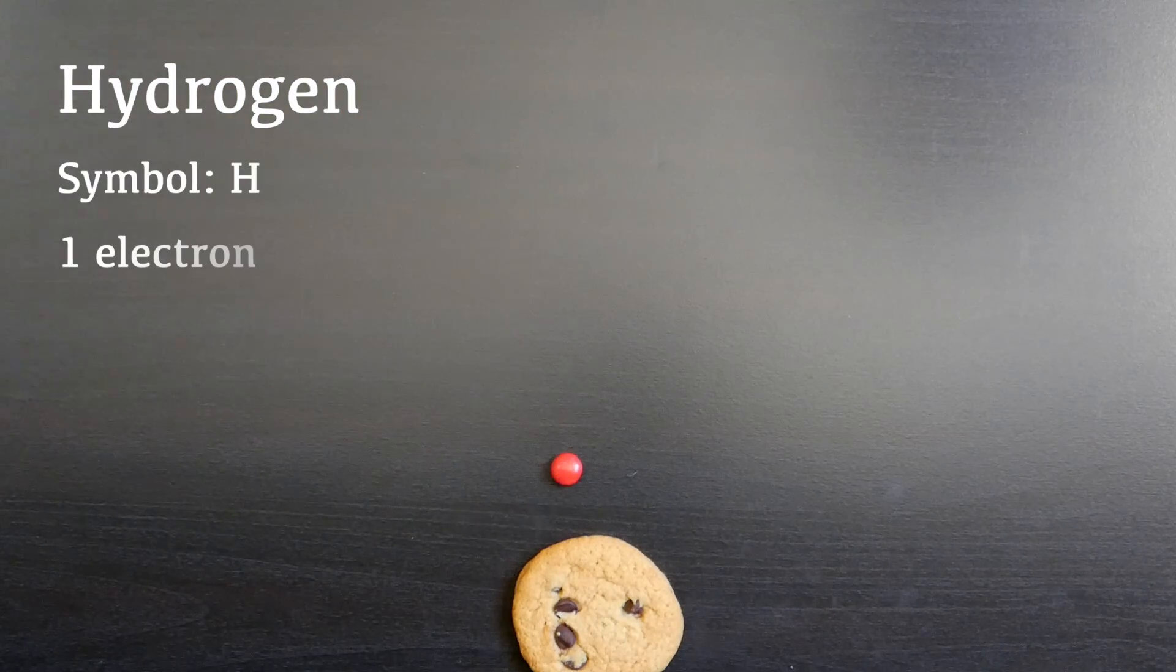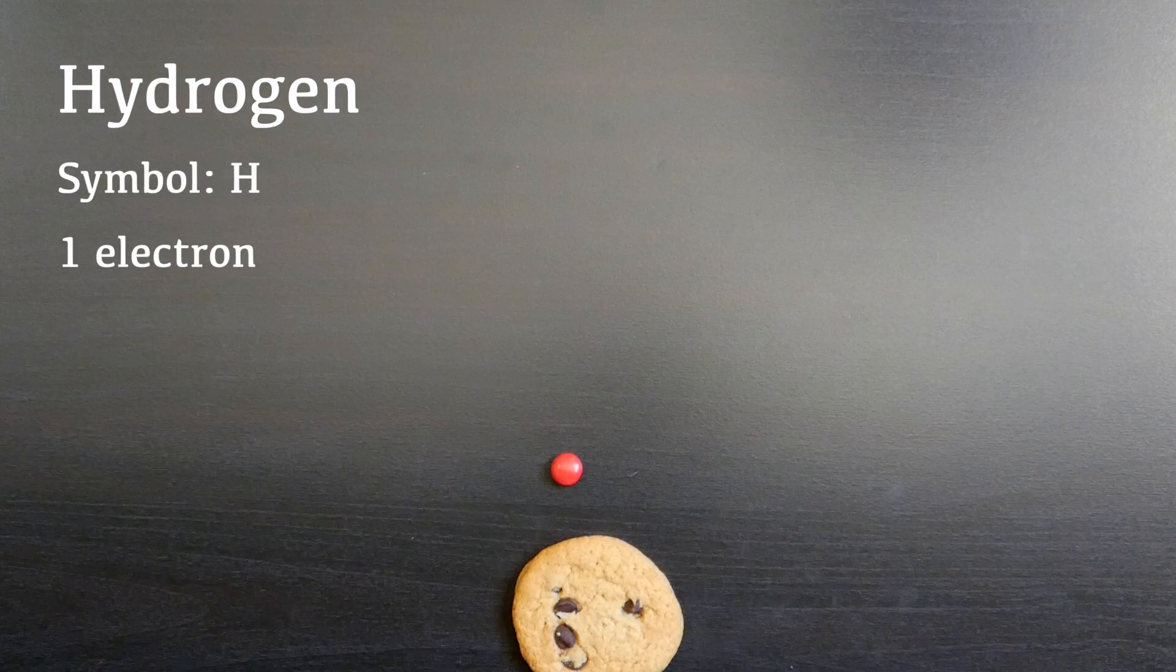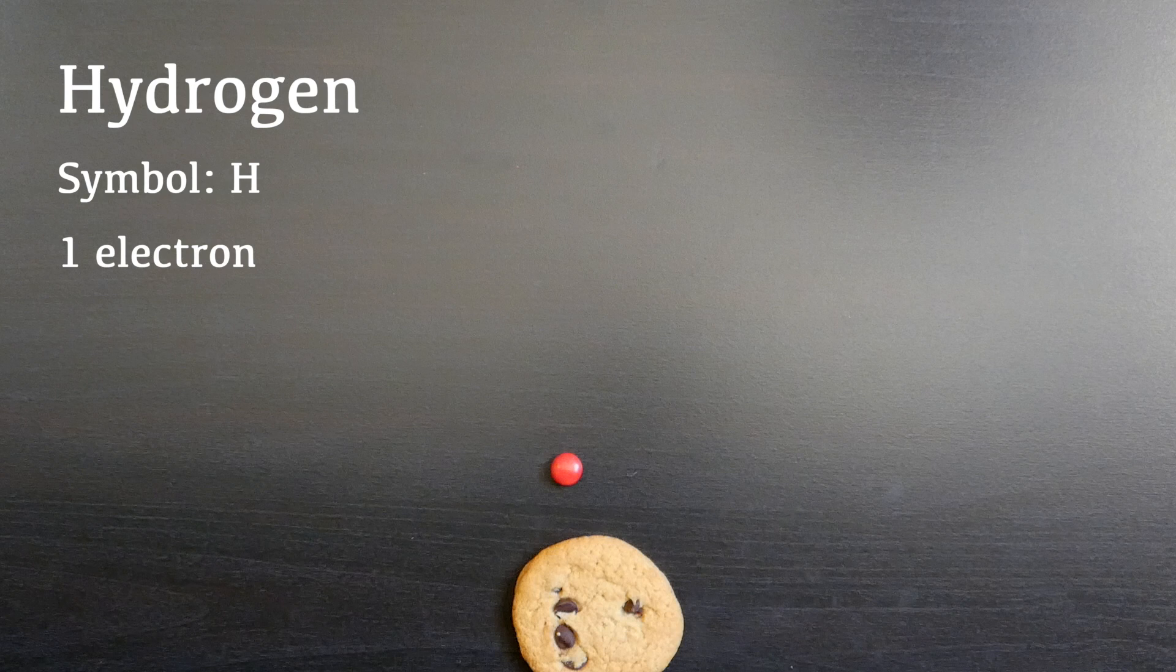The simplest possible atom belongs to the element hydrogen. In our model, it looks like this. There is just one electron, and the nucleus contains just one particle, called a proton.